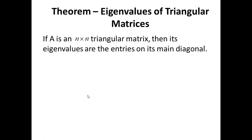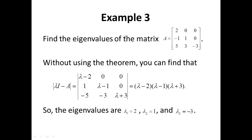Theorem: eigenvalues of triangular matrices. If A is an n by n triangular matrix, then its eigenvalues are simply the entries on its main diagonal. Example: find the eigenvalues of a lower triangular matrix A. The characteristic polynomial det(Lambda I minus A) equals (Lambda minus 2)(Lambda minus 1)(Lambda plus 3), since the determinant of a triangular matrix is the product of its main diagonal elements. The eigenvalues are Lambda equals 2, Lambda equals 1, and Lambda equals negative 3.